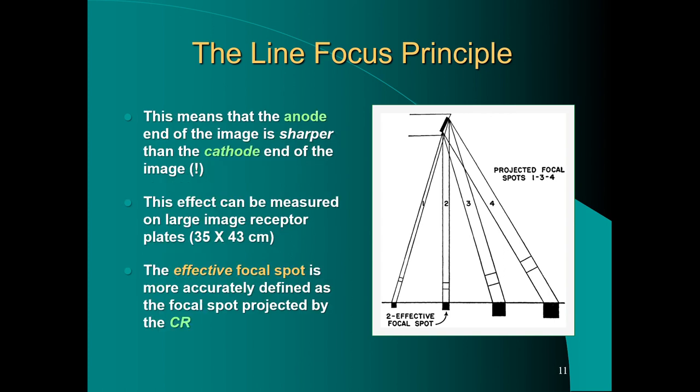This means the anode end of the image is sharper than the cathode end of the image. The effect can be measured on large image receptor plates. You could actually see this by putting different objects of equal size and shape on opposite ends of an image receptor and observing that the cathode end would be relatively less sharp and the anode end would be relatively sharper. The effective focal spot is more accurately defined as the focal spot projected by the central ray.